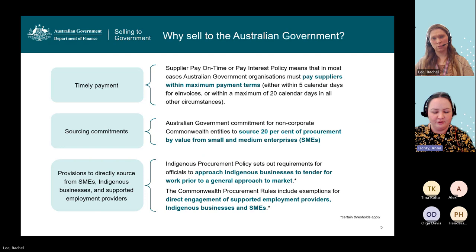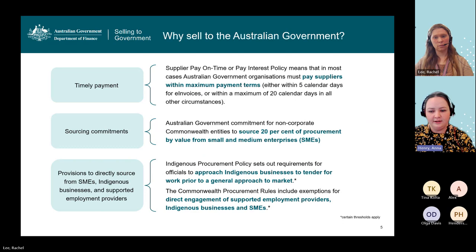These provisions have certain thresholds that apply. A small and medium enterprise is defined as a business in Australia or New Zealand that employs up to 200 people on a full-time equivalent basis. An Indigenous business is one that has 50% Indigenous ownership, usually demonstrated through registration with a certification body such as Supply Nation or state and territory equivalents, and depending on the procurement process, it may also be demonstrated through a statutory declaration.